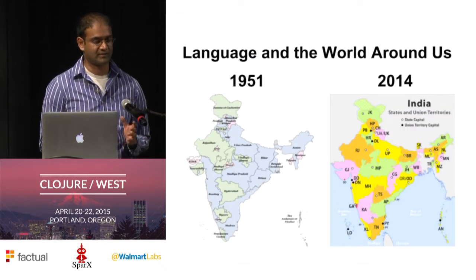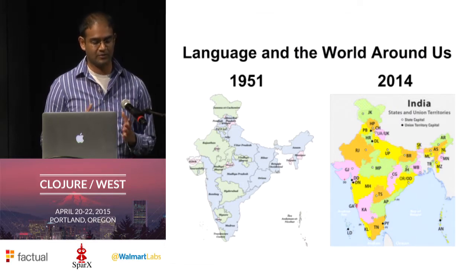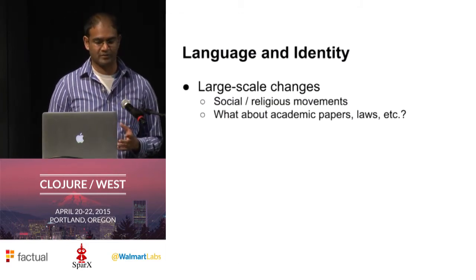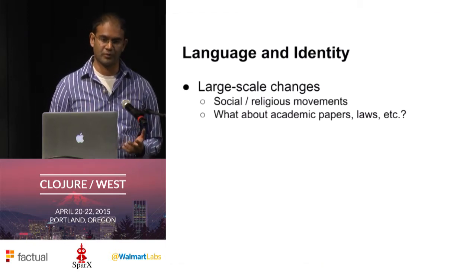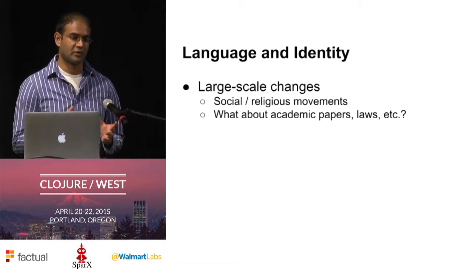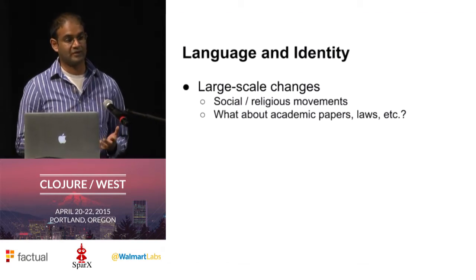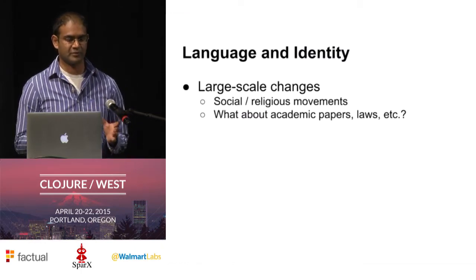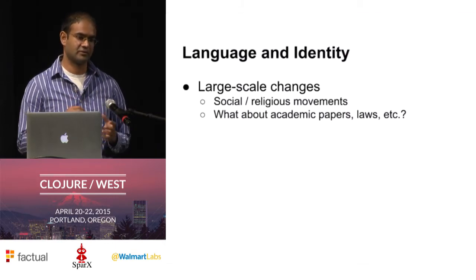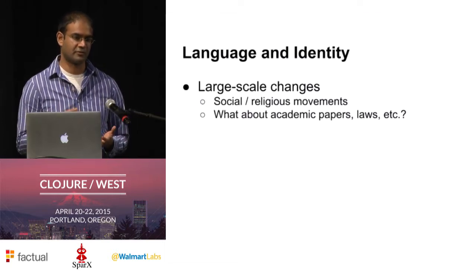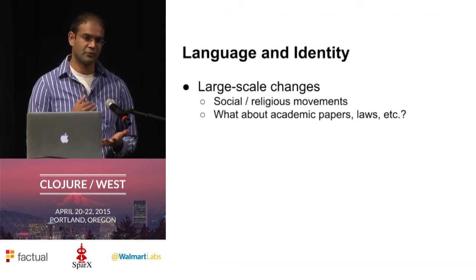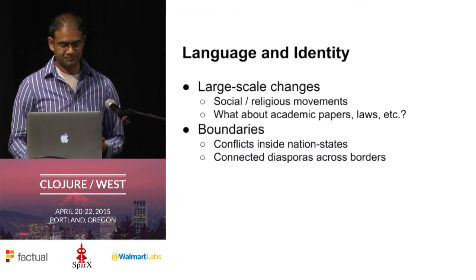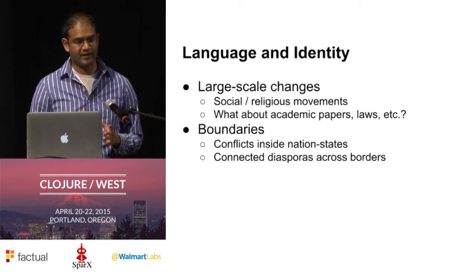After India got its independence in 1956, they decided to redraw the boundaries of the states, and they chose language as something more significant and meaningful to do so. Language also shapes our identity and our social bonds. Throughout history, there have been large-scale movements in which language played an important role. During the Reformation, some of Martin Luther's theses were that religious texts and services should be in the local vernacular. For any large-scale movement to occur, the message needs to reach a large portion of people — more likely in the common vernacular or local dialect or slang.